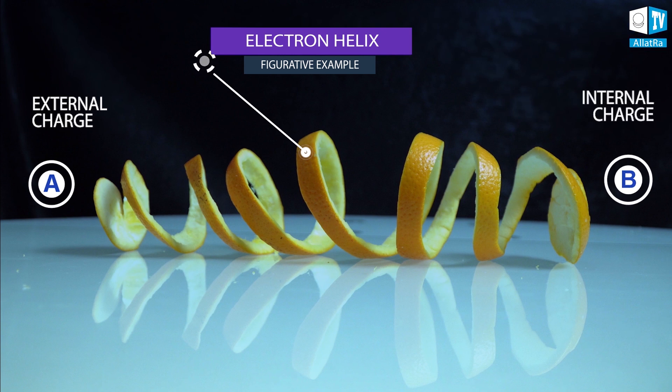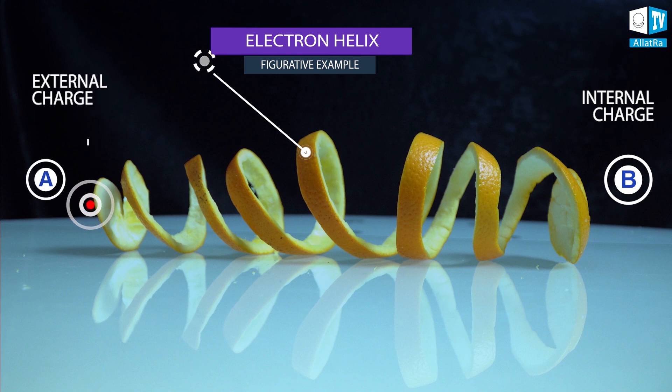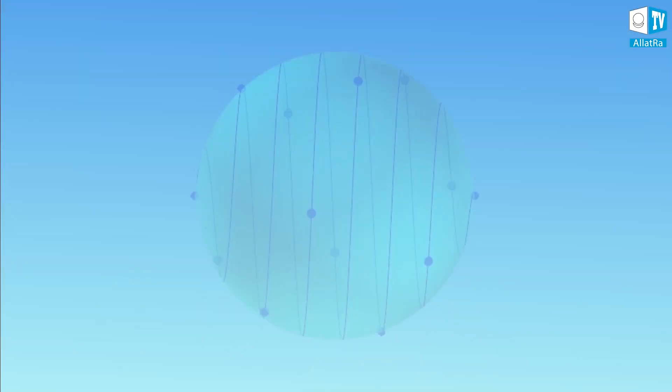Any external change in point A on the orange side of the peel will lead to the same instant internal change, but which will be opposite in the power and influence in the points located on the white side of the peel under point B.